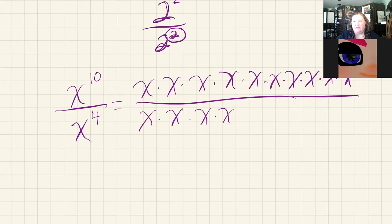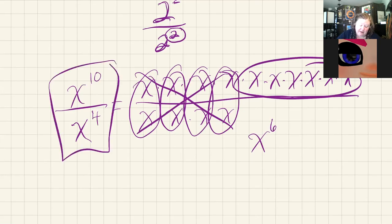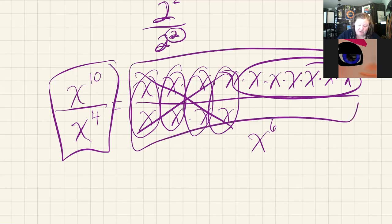And remember, these exponent properties or these exponent rules are really just there to give us shortcuts. And I know that this x over x is a one, invisible one. So is this, so is this, and so is this. So I can cross them off. What does that leave me with? Six x's in the numerator. So that's x to the sixth power. A much shorter version of doing this would be to just take this and say, look, I know that this is what it's going to be in the drawn out long version. So I'm just going to say x to the tenth minus four equals x to the sixth power.